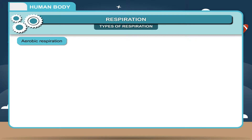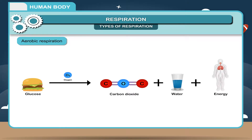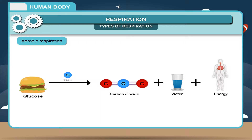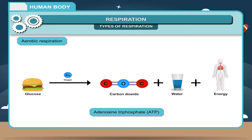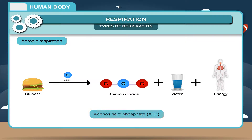Aerobic Respiration: This type of respiration occurs in the presence of oxygen. Oxygen is utilized to break down the food — glucose — to release a high amount of energy. This energy is stored in molecules of adenosine triphosphate, ATP.